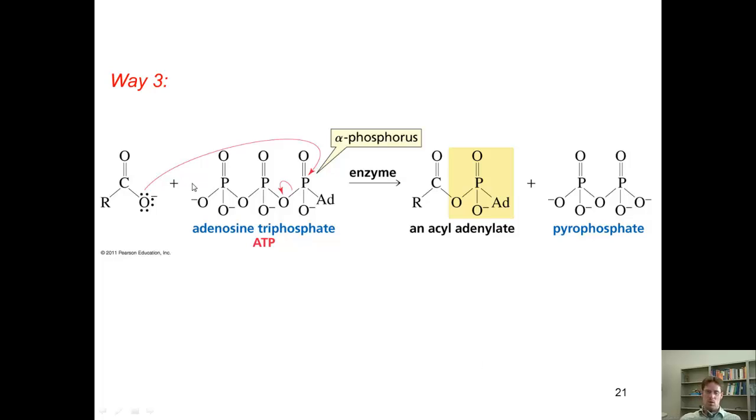A third way, of course, as you might have anticipated, is to have the deprotonated carboxylic acid attack the third phosphorus. Upon doing this, it generates an acyl adenylate and releases pyrophosphate as the leaving group.